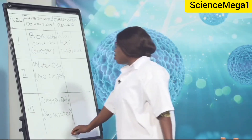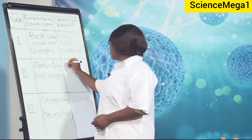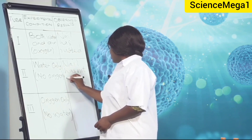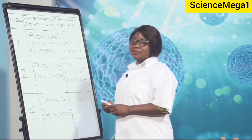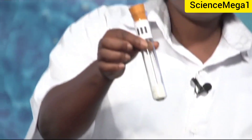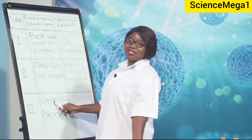The nail in test tube two has not rusted — it has not changed. This nail was subjected to only water but no oxygen. The nail in test tube three has also not rusted and hasn't changed. This nail was subjected to only oxygen but no water.